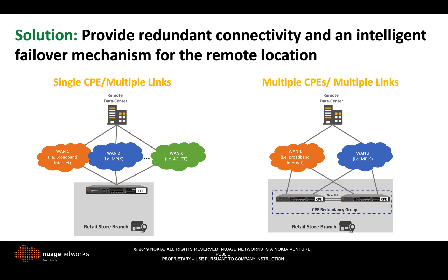We may also have the situation with redundant CPEs, where we are protected in case of failed links and a failed gateway. There is another new feature called shunt link, which will protect users in case they are connected to a single CPE and need to exit via the uplink of the other CPE. In this demo, I will demonstrate the first case: one CPE, multiple WAN links.